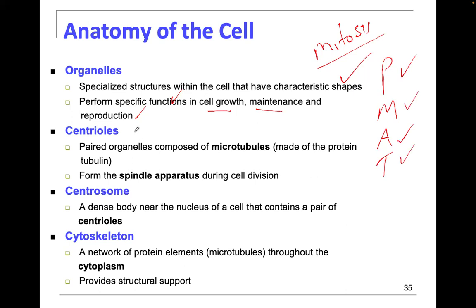Involved in mitosis are the centrosomes, which are linked to the centrioles. The centrosome is the dense body near the nucleus and it contains pairs of centrioles. Centrioles are paired organelles made up of protein. Because it's a thicker protein, they're called microtubules. The smaller proteins are called microfilaments, and the ones between the thinnest and thickest are called intermediate filaments.